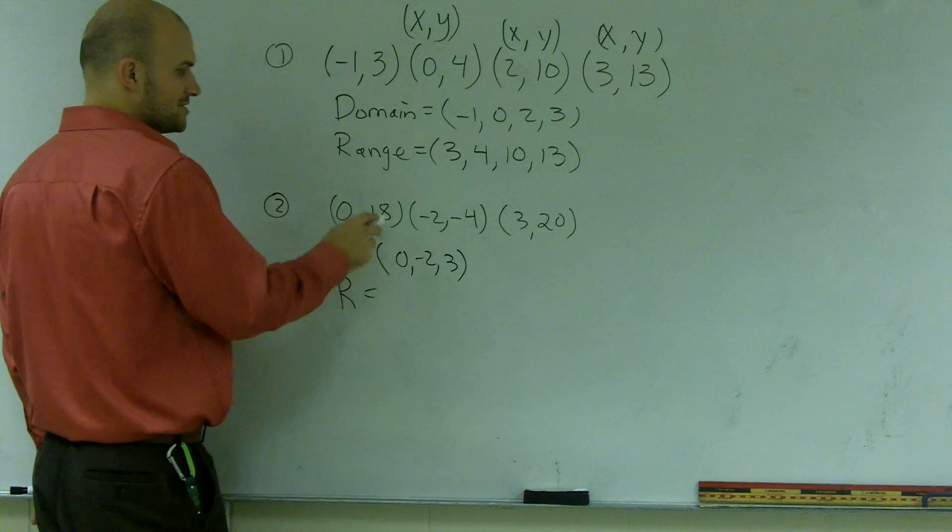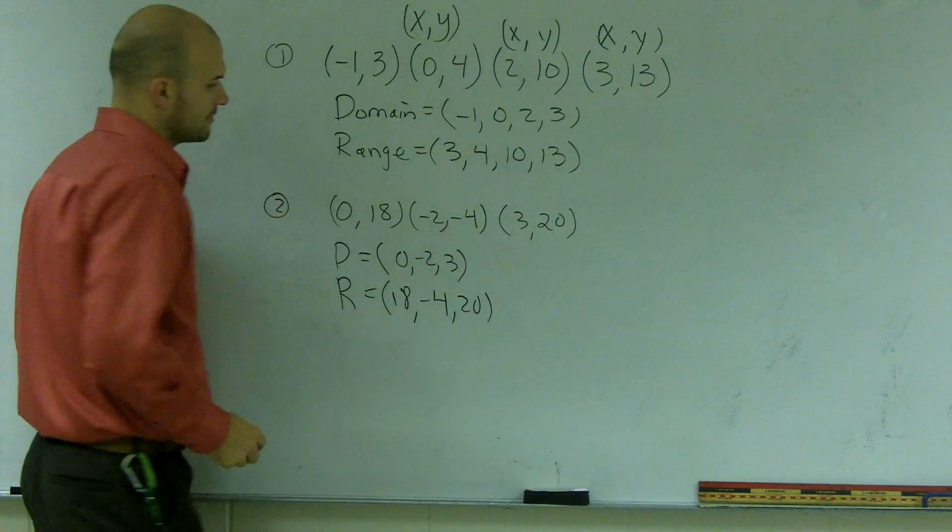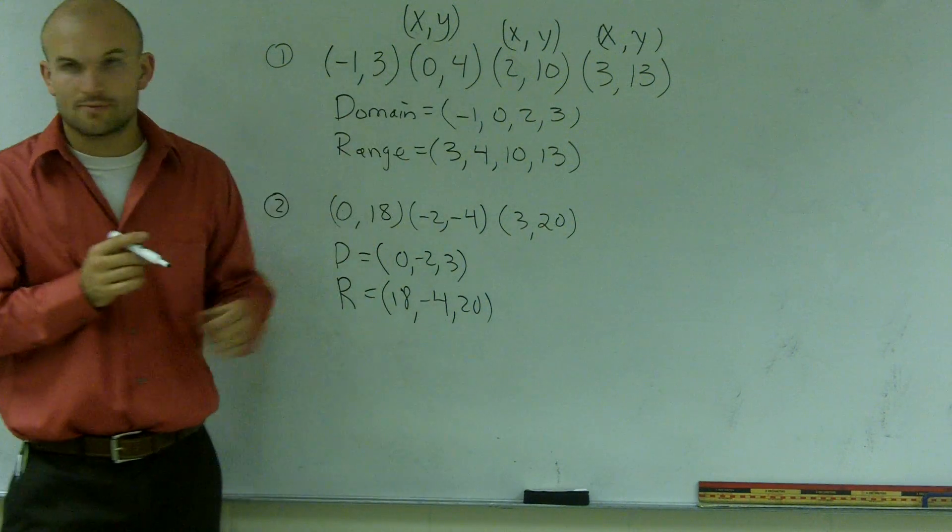And for my range, it would be 18, negative 4, and 20. And that's how you find the domain and range when given ordered pairs.